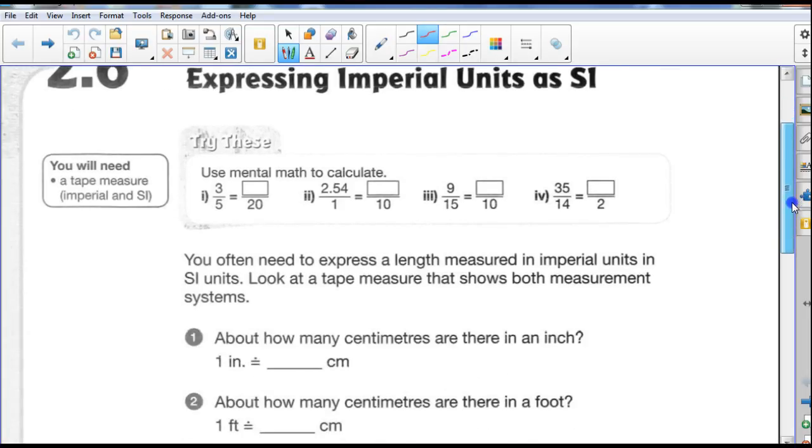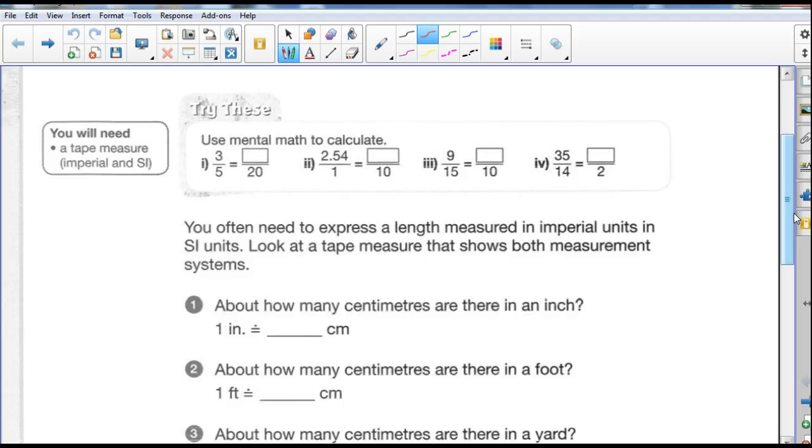So let's do some of the try these first. It says here, use mental math to calculate the following. Well, we have a fraction of three-fifths and we want to find the equivalent ratio when the denominator is 20. So from 5 to 20, how did we get to 20 from 5? Well, we multiplied by 4. So what we do to the bottom, we do to the top. So 3 times 4 is 12. So 12 over 20 is the equivalent fraction of three-fifths.